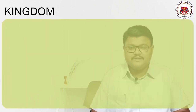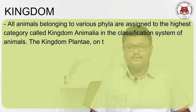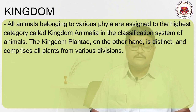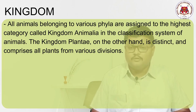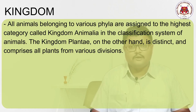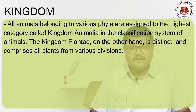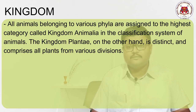We have now reached the last taxonomical category — Kingdom. The entire world's living organisms are divided into kingdoms. The two main kingdoms are Kingdom Animalia (all animals) and Kingdom Plantae (all plants). Students may ask about organisms that don't fit plants or animals — these are covered in other kingdoms. Currently, we recognize five kingdoms, and their explanations will come in a future topic.